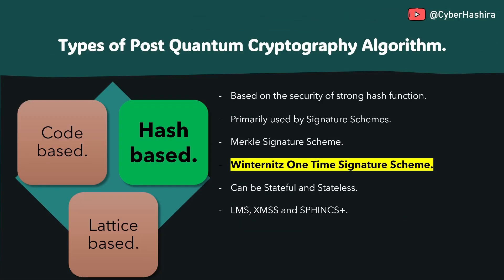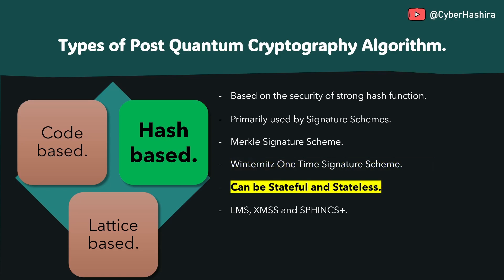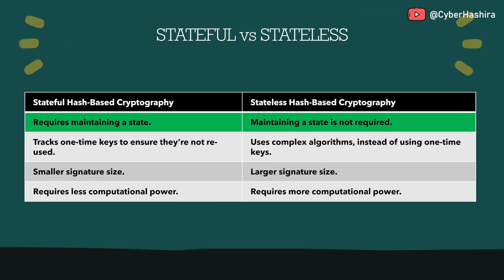Coming back to the main slide, the Winternitz one-time signature is a digital signature scheme that uses a secure hash function to sign messages. Each key is used only once and is never reused, as doing so could compromise the security of the scheme. A hash-based algorithm can be put into two categories: stateful and stateless.